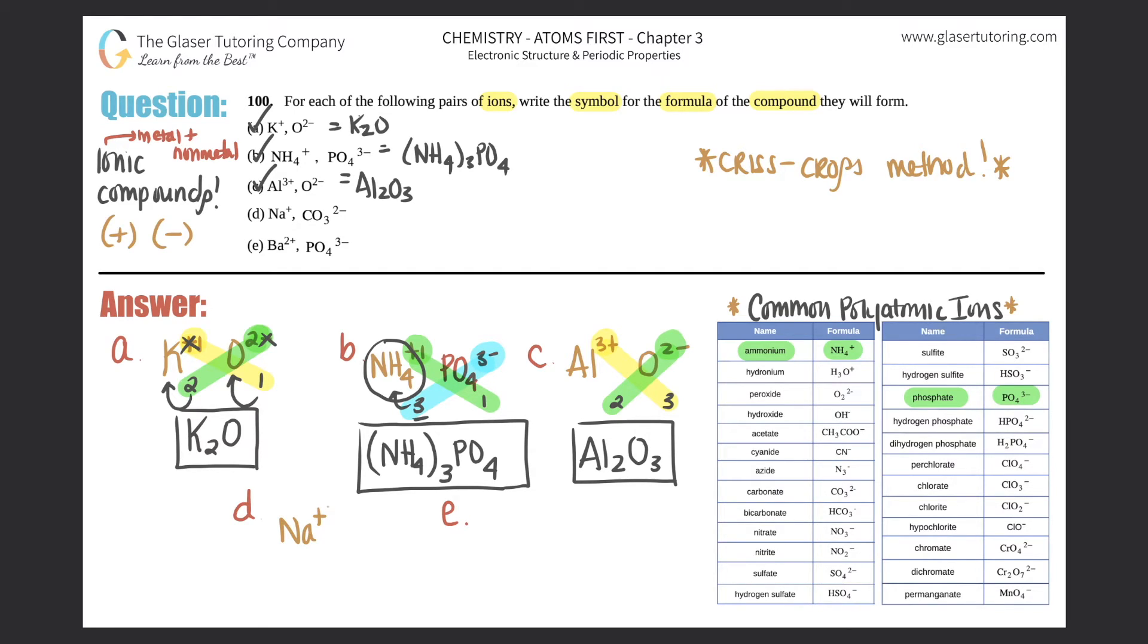Next, for part d, we have Na - they just say it's a +, so it's a +1. Then we have CO3 2-. CO3 2- is another polyatomic - that's carbonate. If we notice over here, carbonate is always going to be CO3 2-. You see the drift guys - memorize those so we can spot them out.